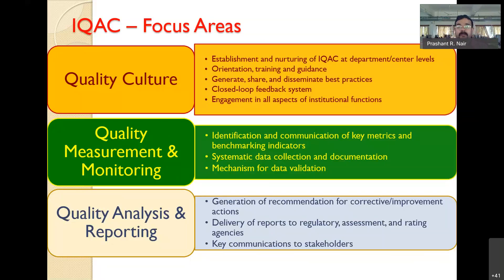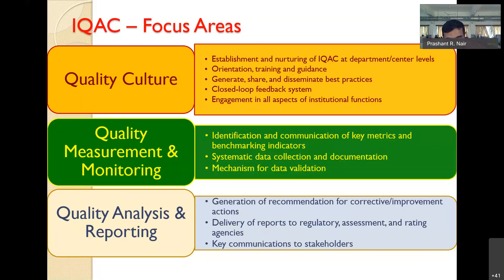You can report to the management through the principal that these issues exist. For example, student scholarships have come down — that will affect us next year in the NAAC or NIRF ranking. Research papers are increasing, which is good, but research funding has come down. How can we strategize to improve these things?